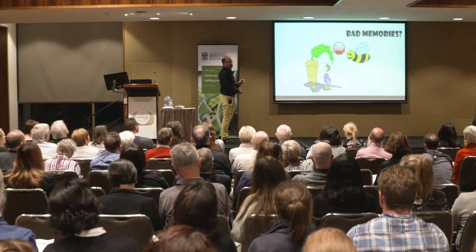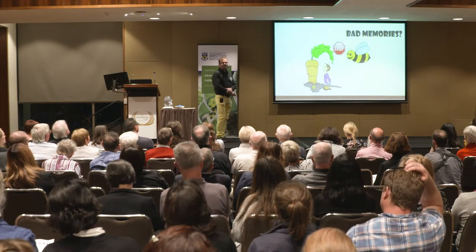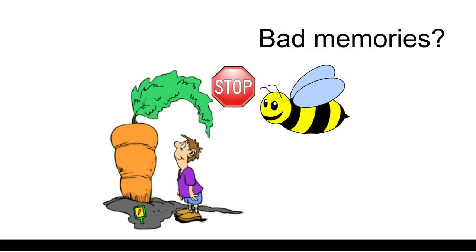Another example where pollination chemistry is important is in crop research. Most crops, such as carrot, use honeybees as the pollinators. In Australia there are more than 100,000 tons of carrot produced every year. The problem here is again pollination, because carrot flowers are not very attractive to the pollinators.